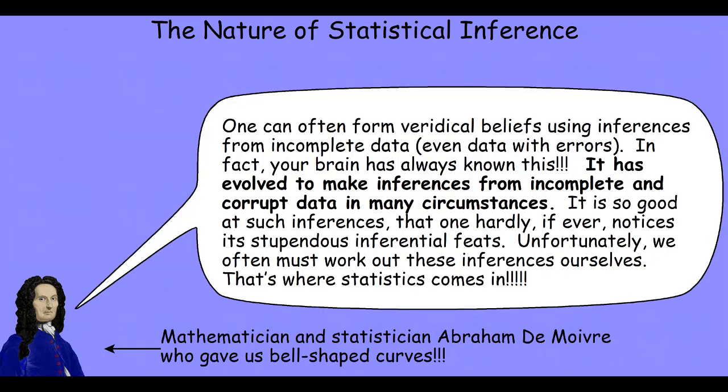So what we learn is something like what the mathematician and statistician Abraham De Moivre realized, that we can often form veridical beliefs as accurate, true, correct beliefs using inferences from incomplete data, even data with errors or noise. And, in fact, our brain has evolved to make inferences from incomplete and corrupt data.